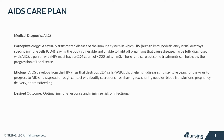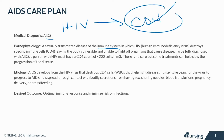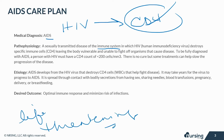Let's take a closer look at AIDS. This is a sexually transmitted disease of the immune system in which HIV, or human immunodeficiency virus, destroys specific CD4 cells, leaving the body vulnerable and unable to fight off organisms that cause disease. To be fully diagnosed with AIDS, a person with HIV must have a CD4 count of less than 200.